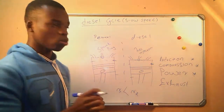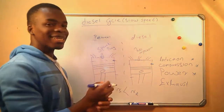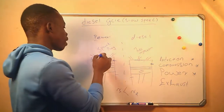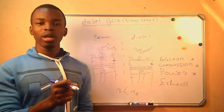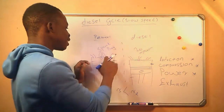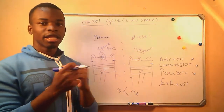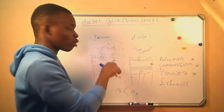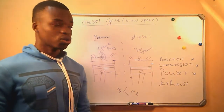Then we have our next stroke, which is the power stroke. Now, as the piston reaches its top dead center, the spark plug will ignite the air-fuel mixture that is now in the clearance volume. And just because it is under pressure, there will be combustion, which will force the piston to move from the top dead center to the bottom dead center. And that's our power stroke.